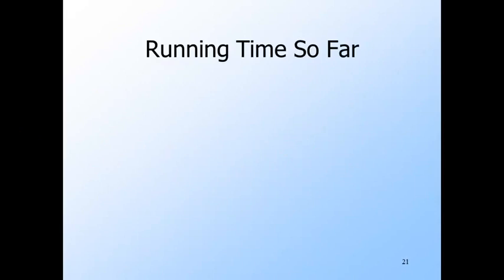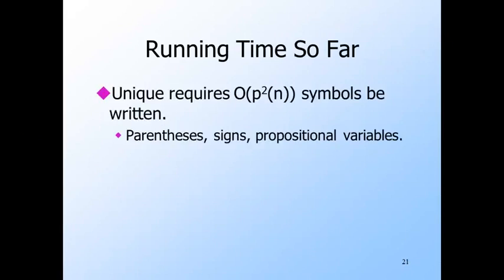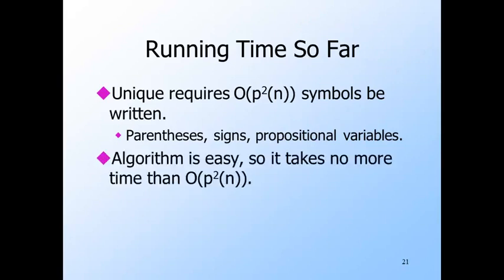Now let's see how long it takes to write down three of the four expressions. Unique is the most time consuming — it requires writing down O(P-squared of N) symbols. The P-squared comes from ranging over all I and J between 0 and P of N. The constant factor comes from the fact that for each I and J there are a large but finite number of pairs of states and tape symbols. The number of pairs is independent of N, so it is a constant. The expression is simple to write by looping on I and J, taking time proportional to its length. Starts right is the AND of P of N propositional variables and can be written in order P of N time. The same holds for finishes right.